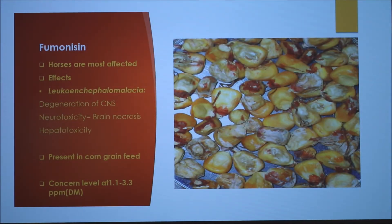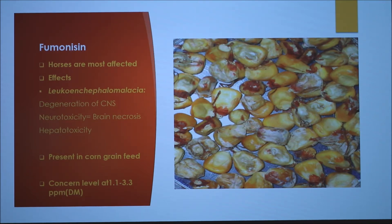Finally we have fumonisin, which is a mycotoxin that affects horses the most. One of the main diseases in equine is leukoencephalomalacia, which is the degeneration of the equine's central nervous system. It can cause neurotoxicity and hepatotoxicity in equine. It is present in corn grain feed, and the concern level for fumonisin is 1.1 to 3.3 parts per million.